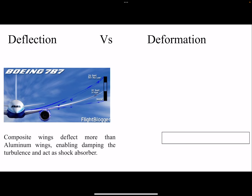One factor we need to think about is the difference between deflection and deformation — these two terms are used interchangeably but are actually different. Looking at the Boeing 787, which is made of composite, it can deflect even more because the stiffness is lower. We are talking about 26 feet of deflection, which is a normal operating condition of the aircraft — this is not true failure.